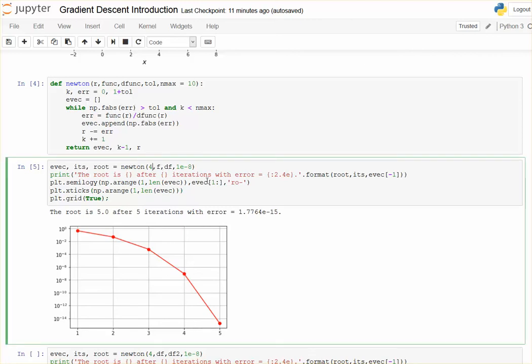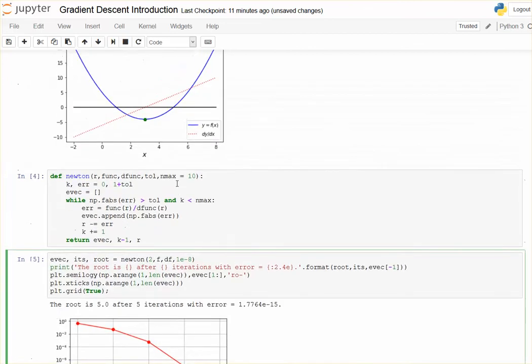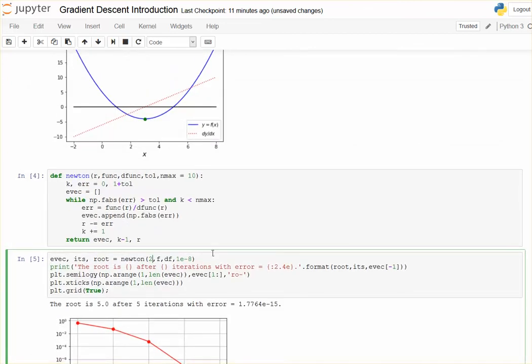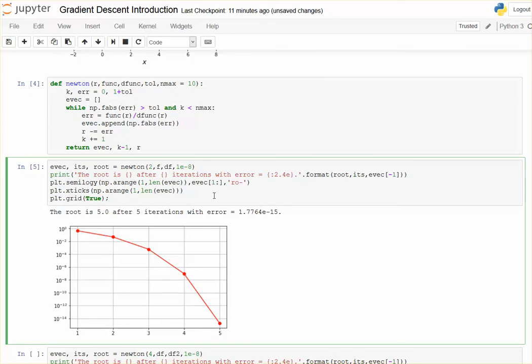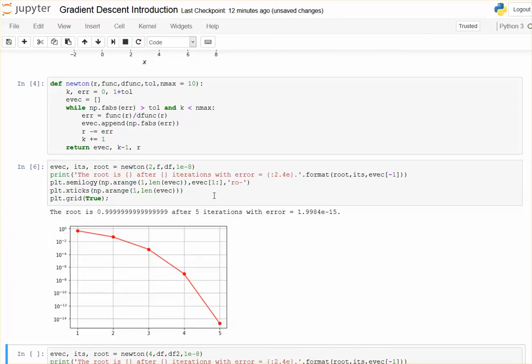And if I put in, let's say two, if I go to the left, yeah, about here, I should expect it to converge to one. And sure enough. The root is 0.99999999. Error is 10 to the minus 15th. And again, we see the quadratic convergence that we expect from Newton's method.